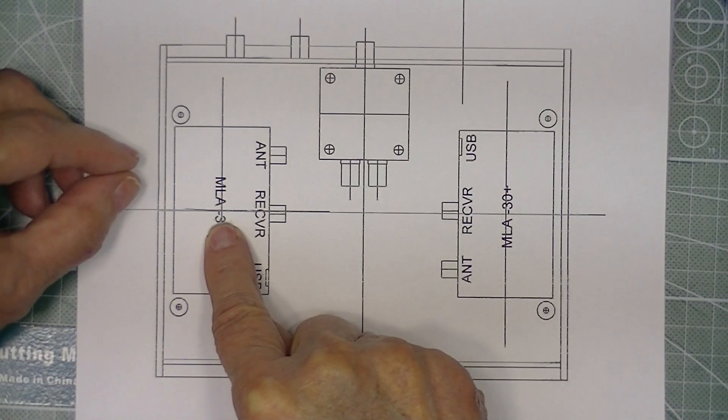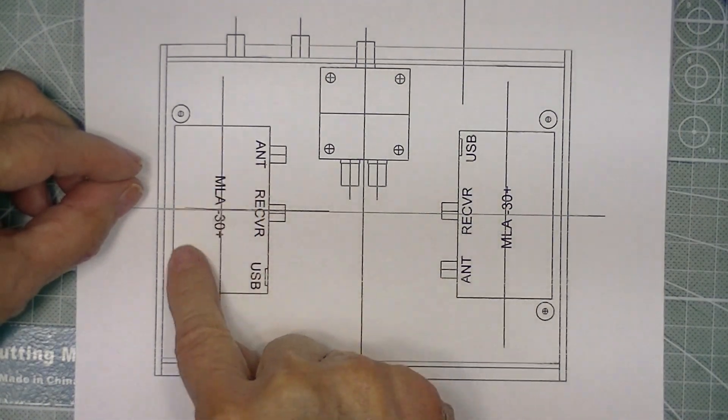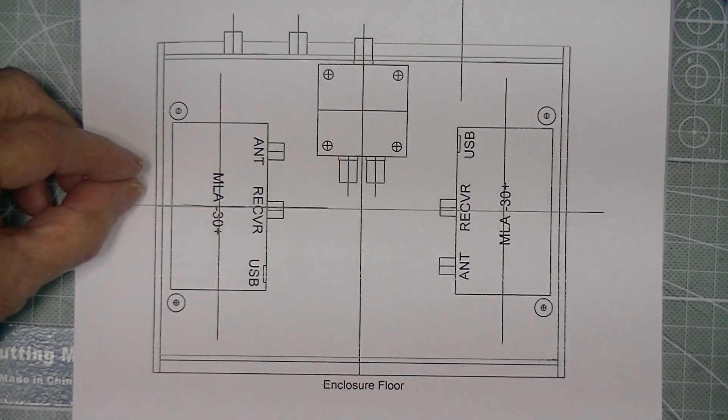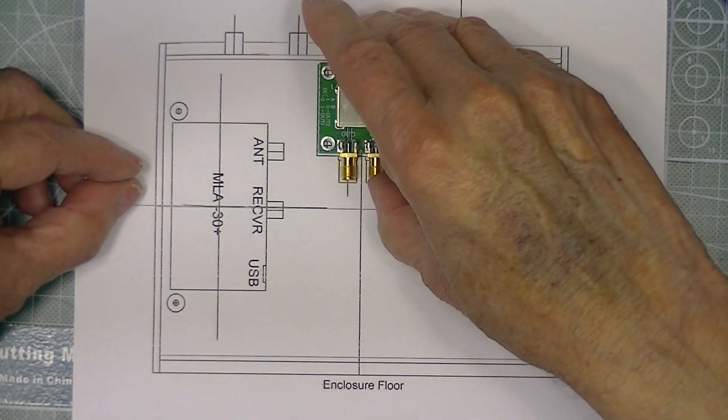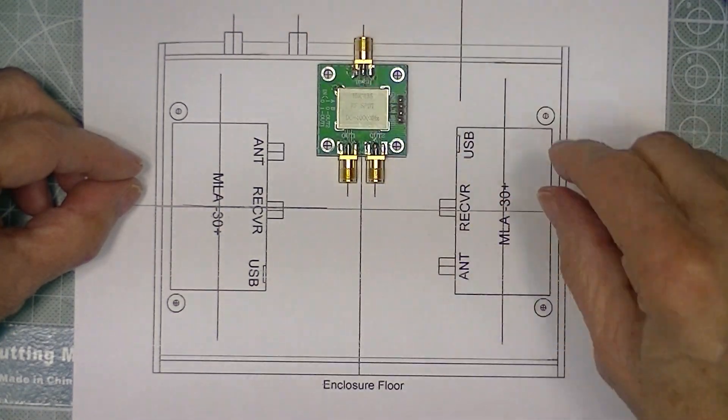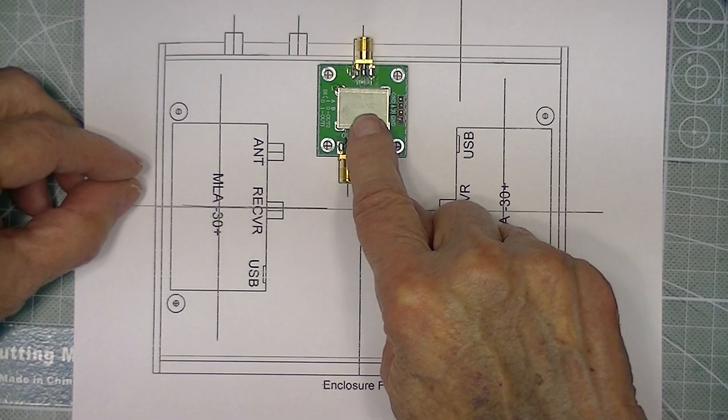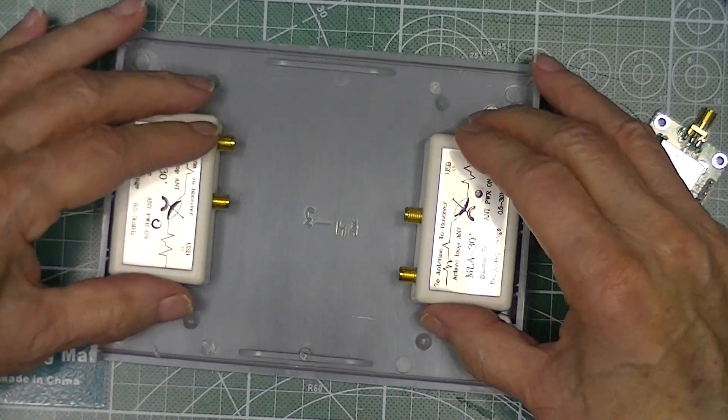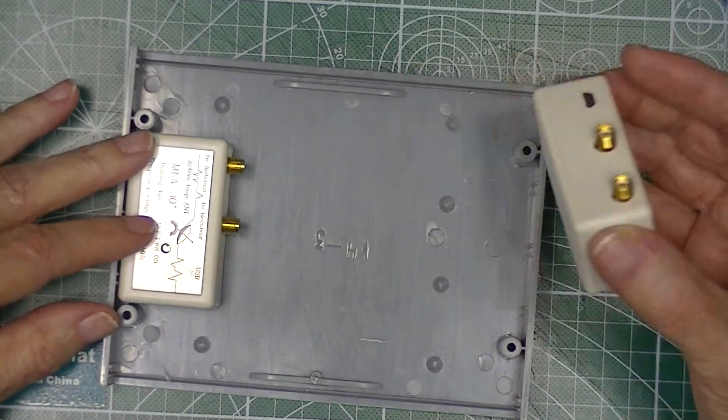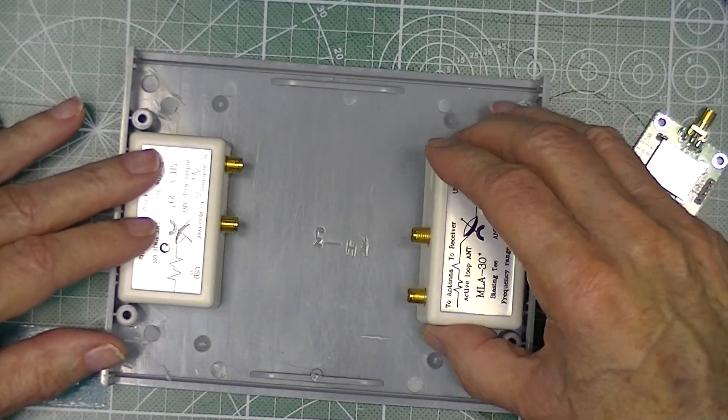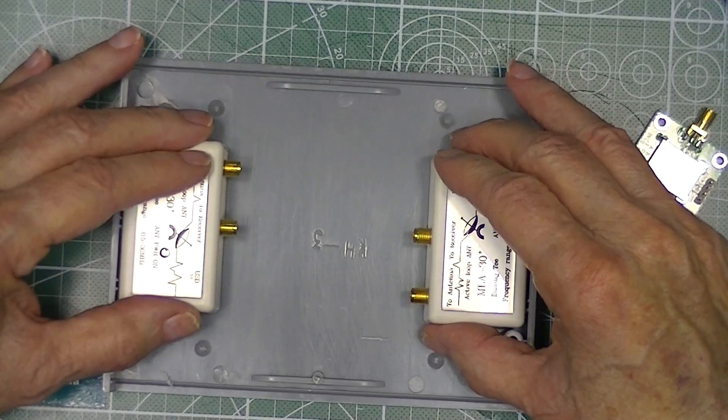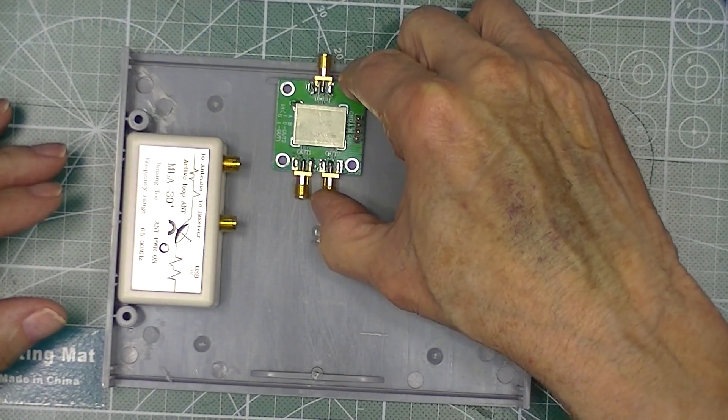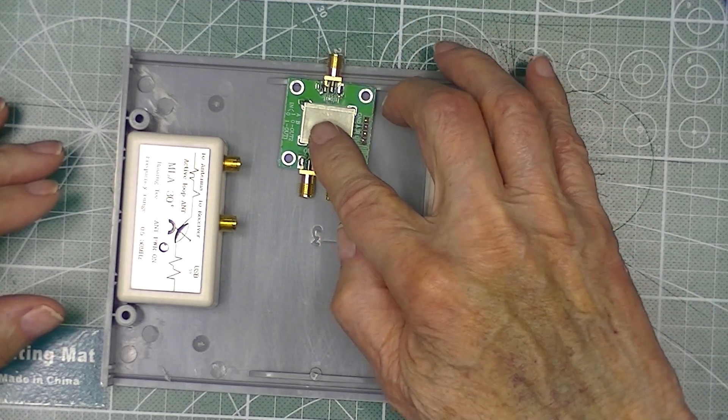Because I have two antennas, I'm going to need two bias T's. And then I'm going to need to switch the receiver between the two bias T's. And I'll just do that with double sided tape, foam tape. Here I'm going to have to drill some holes and mount this up on standoffs.